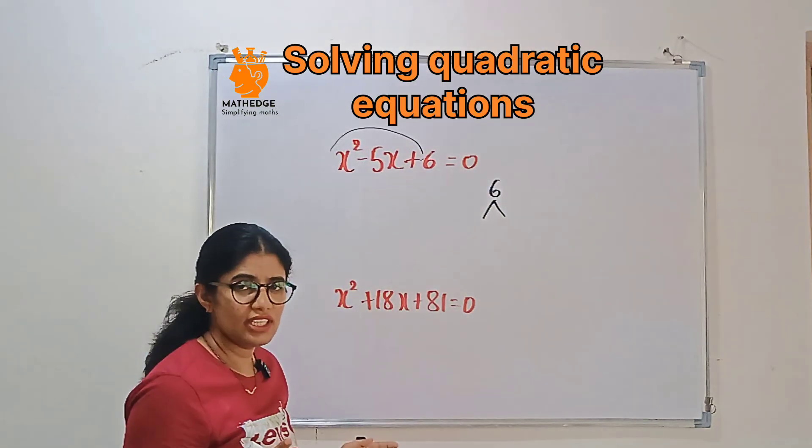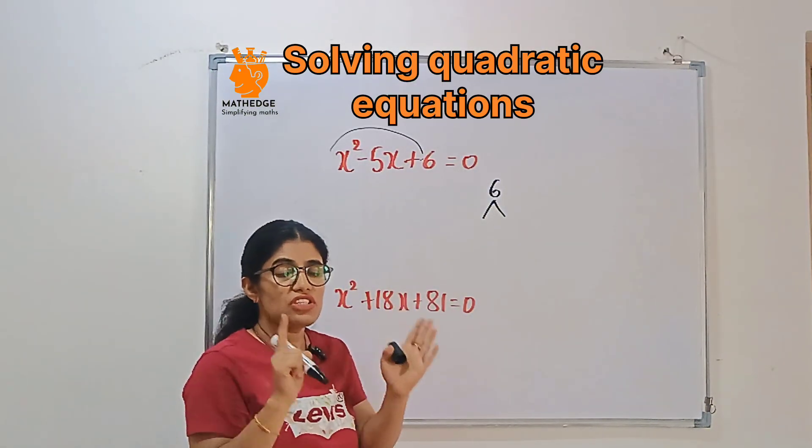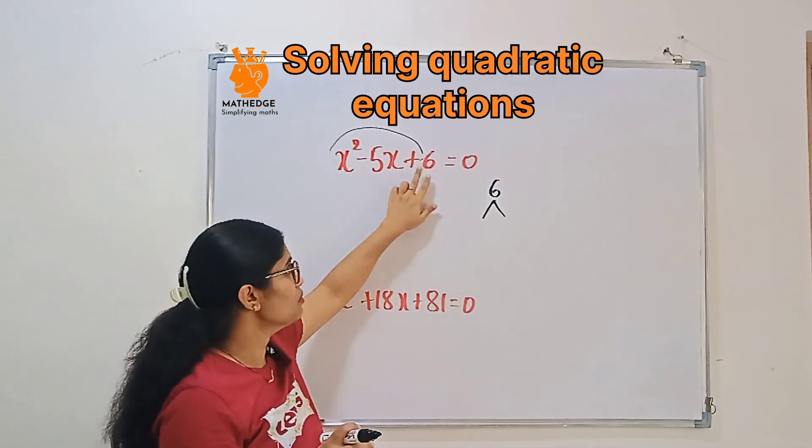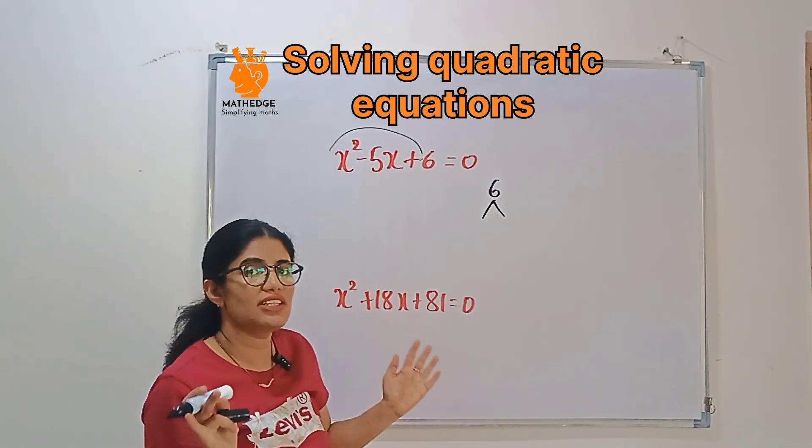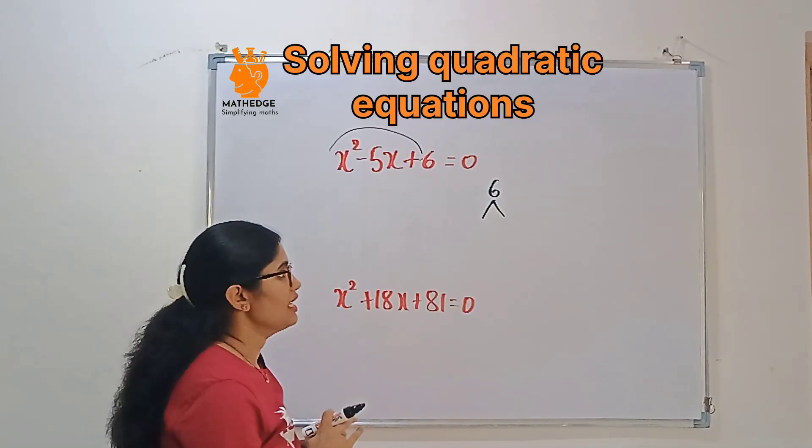Look after the factors of 6. So if you multiply those factors, you should get third term. If you add or subtract those factors, you should get middle term. So like that, we need to choose the factors.